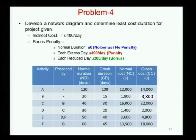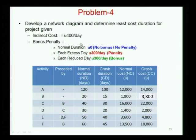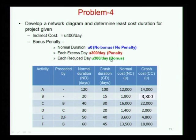So if we take the problem given here, we have a precedence relationship with activity, predecessor, normal duration, and crash duration — all the usual information. In addition, I have given an indirect cost of 400. The addition now is: if the project finishes with normal duration there is no bonus or penalty; for each excess day there is a 300 per day penalty, and for each reduced day there is a 300 per day bonus. Can you set up this network and start working on it? We will solve it.